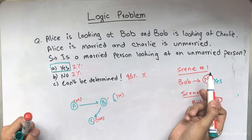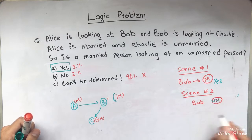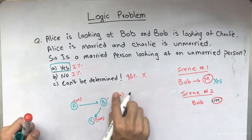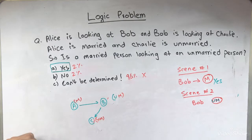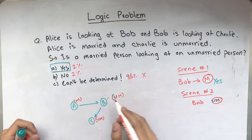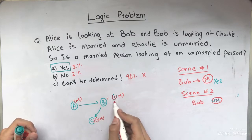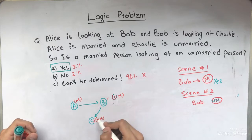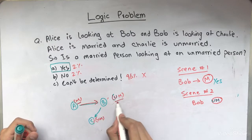Married person is looking at an unmarried person. And what about scene two? When we consider Bob unmarried, here we are going to just write U-M with Bob. And now what we are going to do is look at the situation once again. Here we can see Bob is unmarried. Charlie is unmarried. No matter if he's looking at Charlie, but we can see that Alice, who is married, is looking at Bob, who is unmarried now.